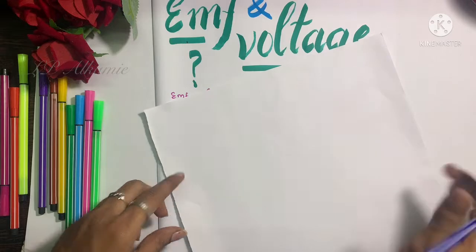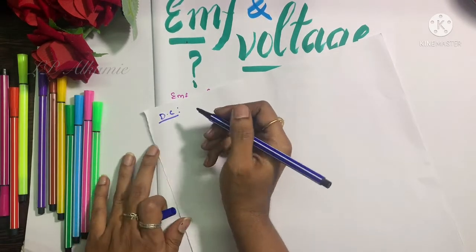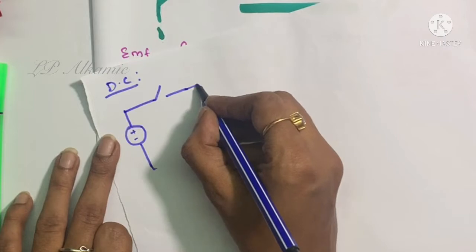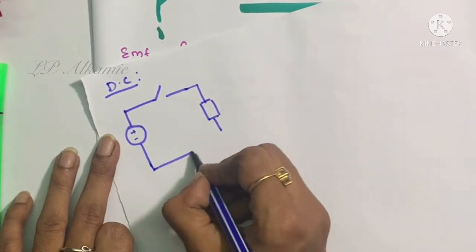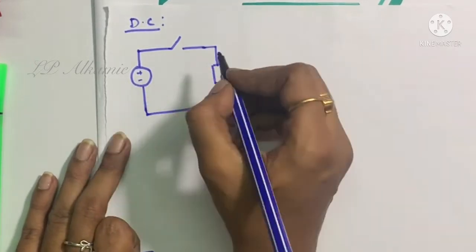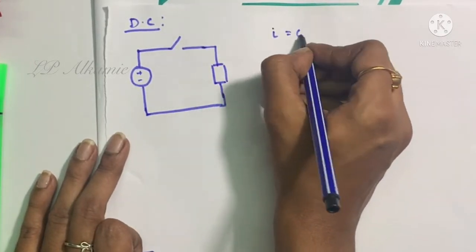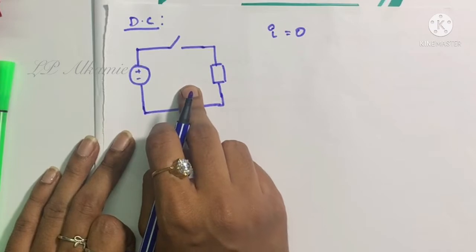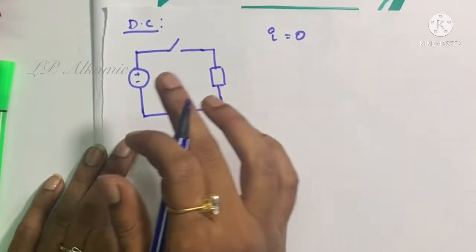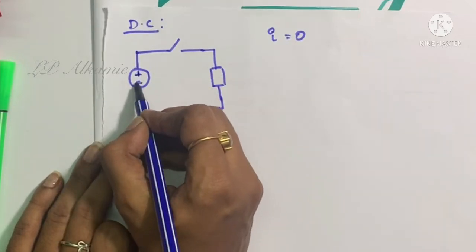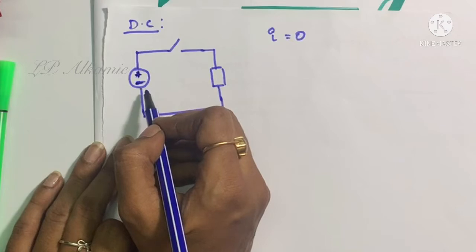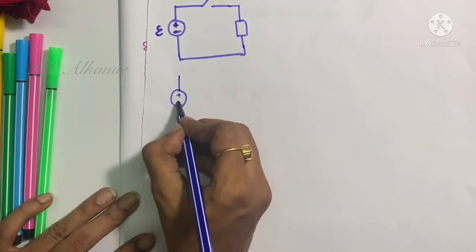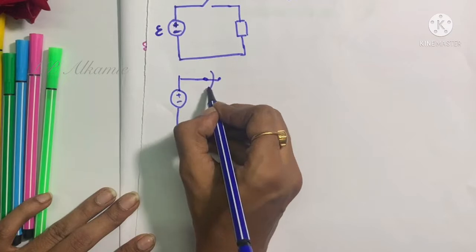Let us consider a DC circuit with a switch and a load. When the switch is in the open condition, that is when current is zero — because since the switch is open there is no current flowing through the circuit — there is still some EMF in this circuit. The potential difference at the source is called the EMF.